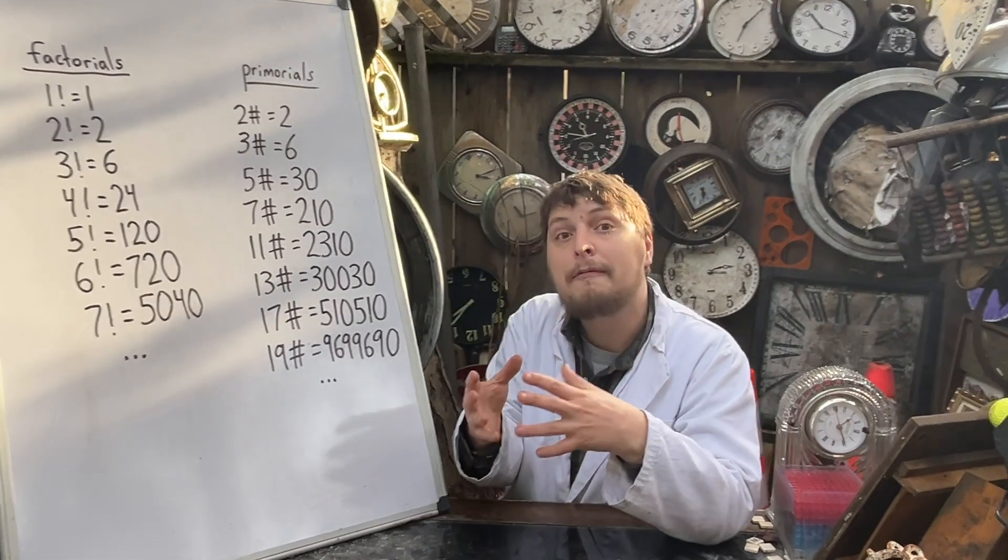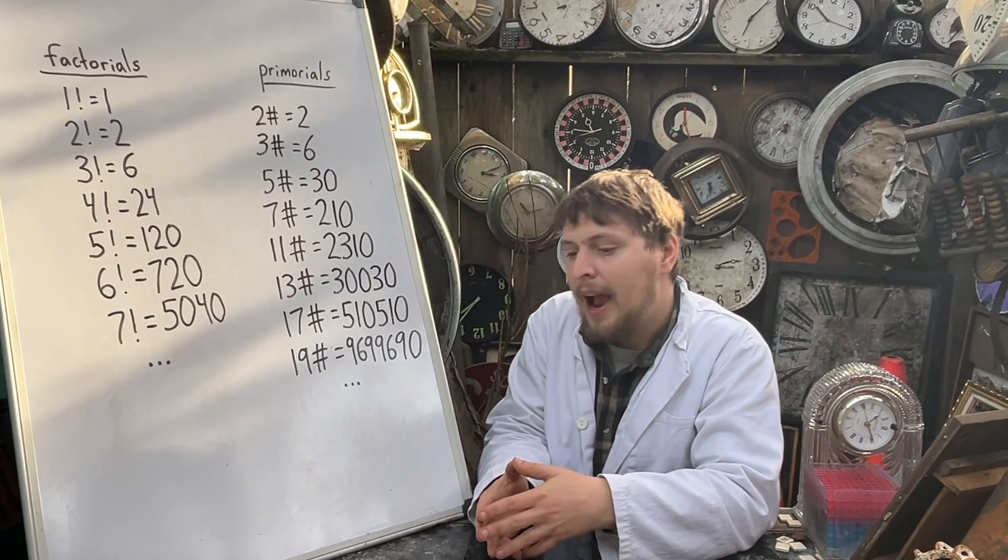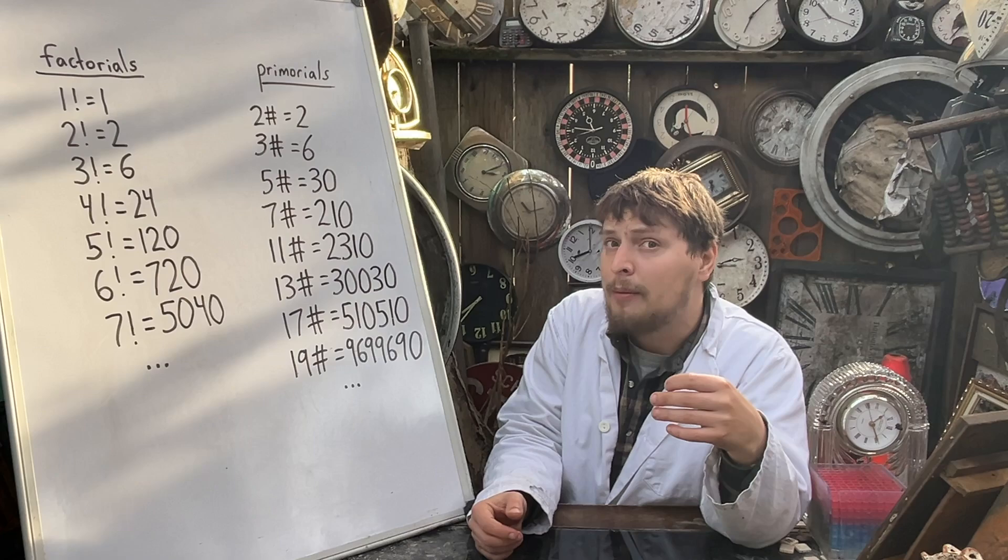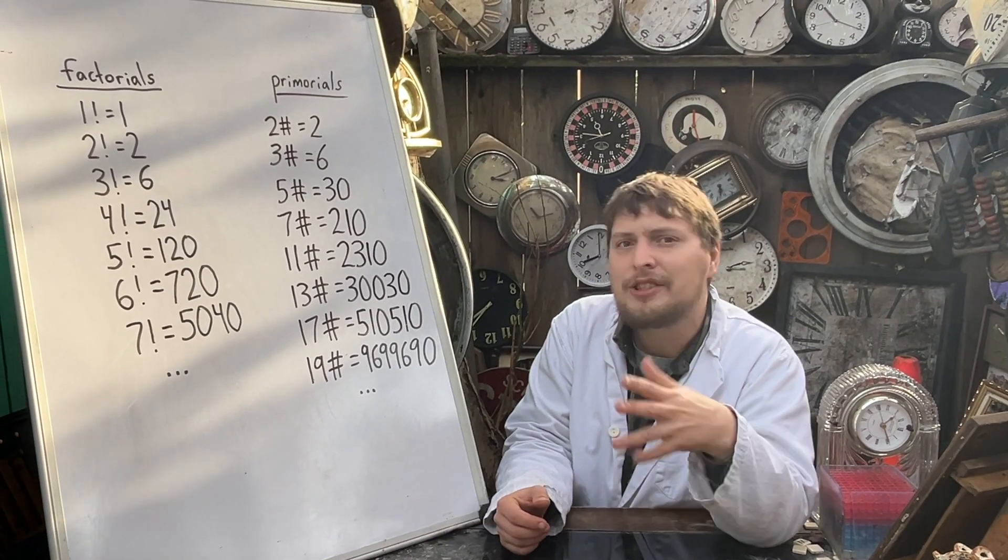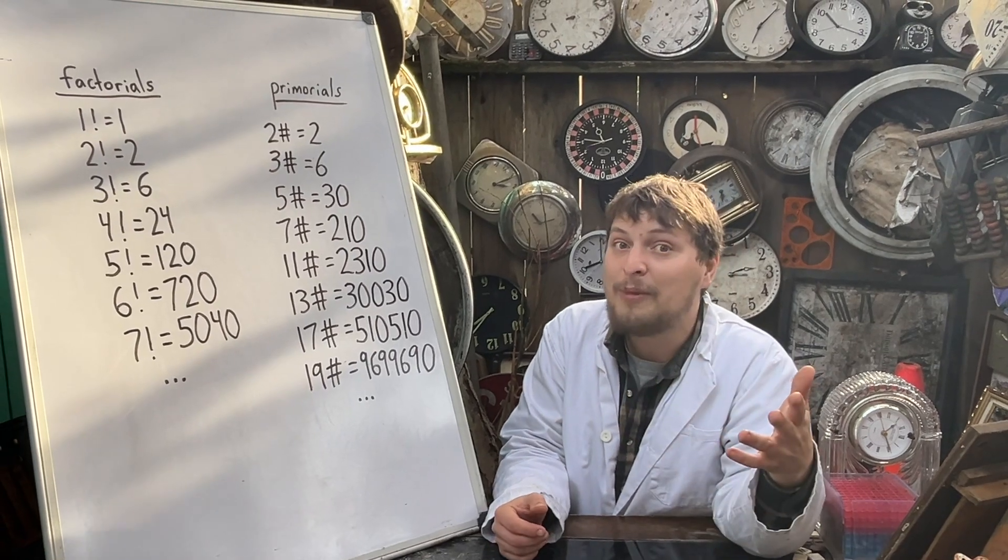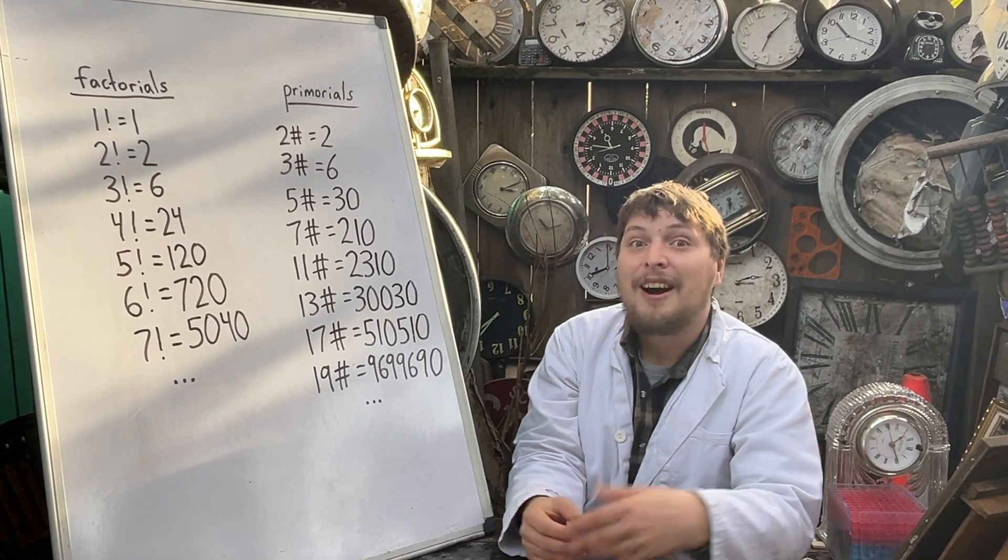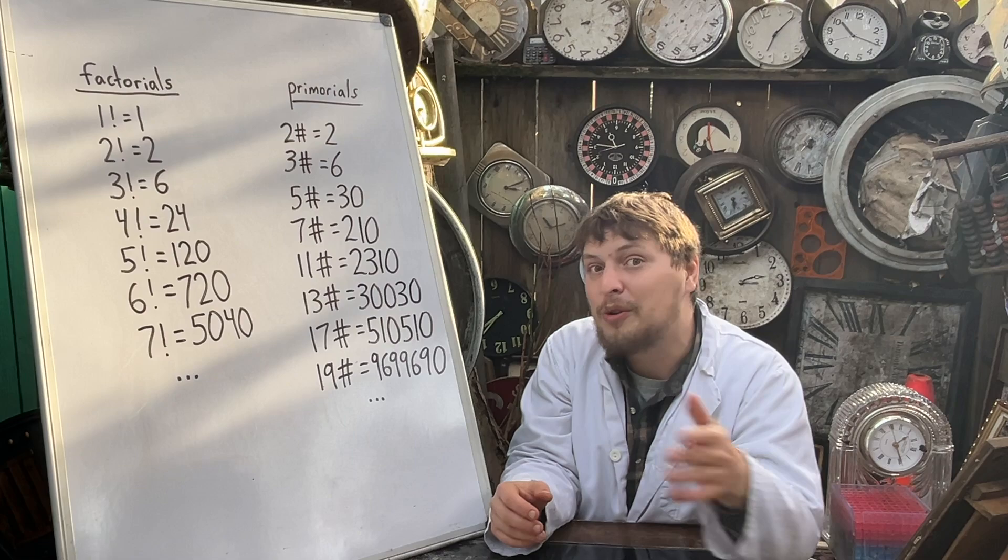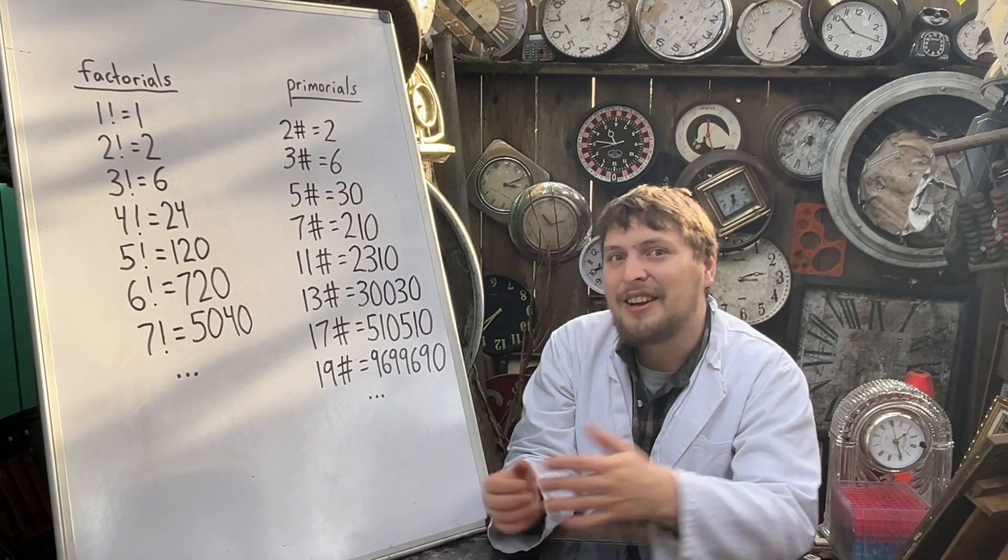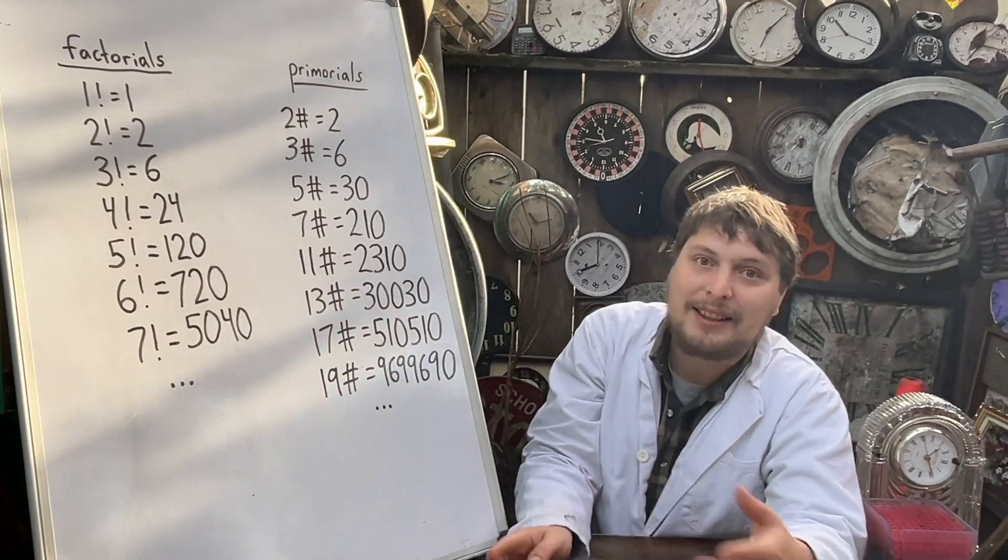in base 12, 12 has a prime factorization of 2 squared times 3, and so numbers that are multiples of 2 squared times 3 would end in a zero in that base. And if a number was a multiple of that twofold, meaning that it was a multiple of 2 to the fourth power times 3 squared, then it would be even further having two zeros at the end of it.